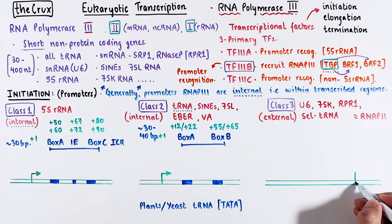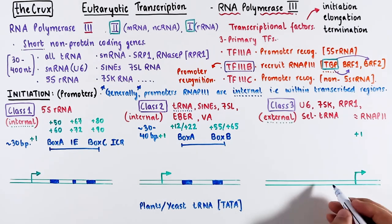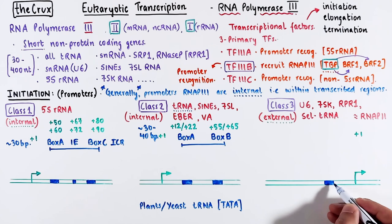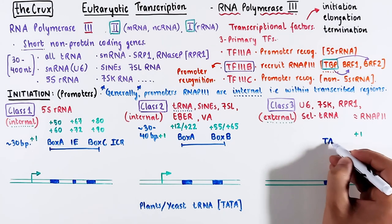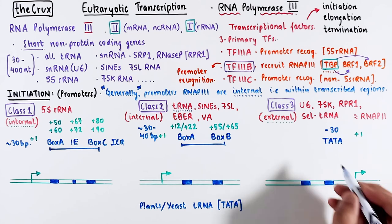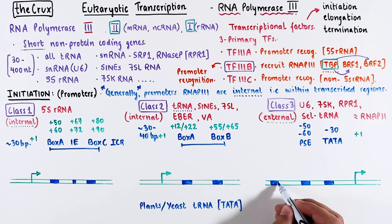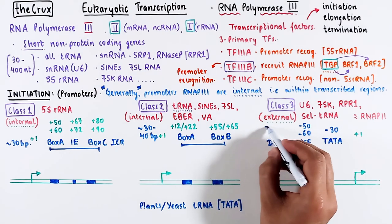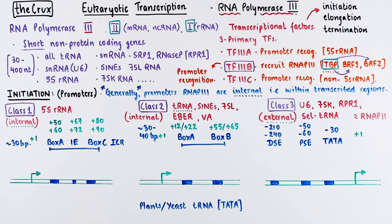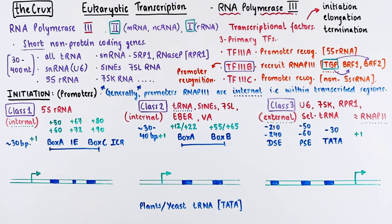Class 3 promoters, unlike the first two classes, are external. The promoter elements are not downstream of the plus 1, but rather upstream. They consist of a TATA box at position negative 30, a proximal sequence element spanning from negative 50 to negative 60, and occasionally a distal sequence element situated further away. The arrangement of class 3 promoters closely resembles that of POL2 promoters.